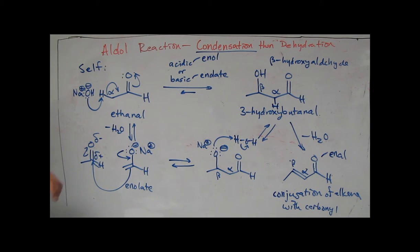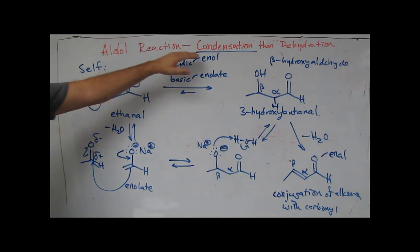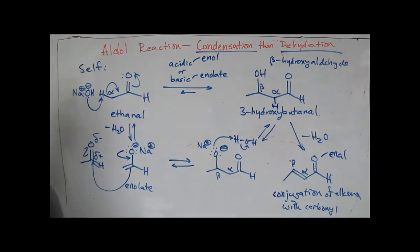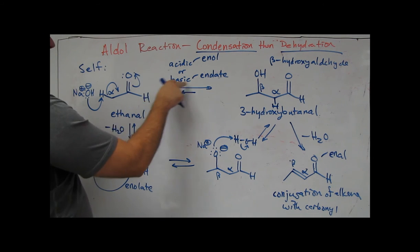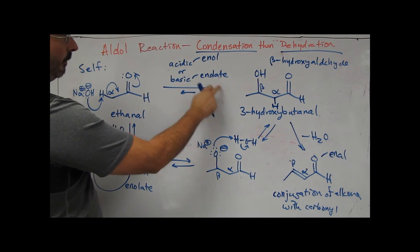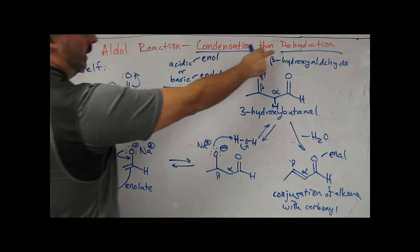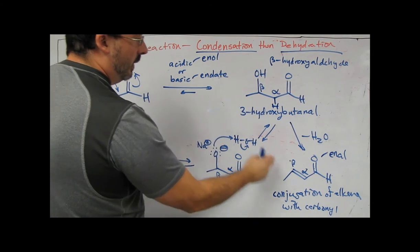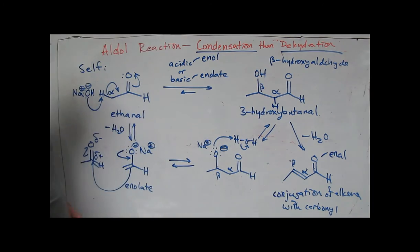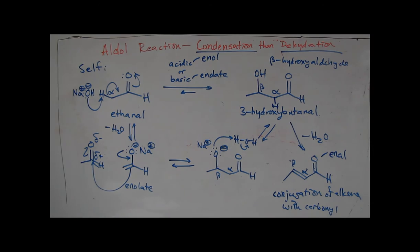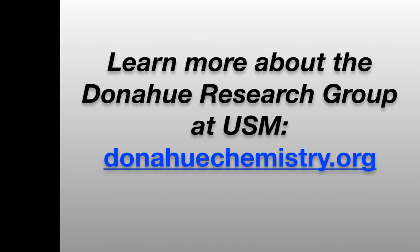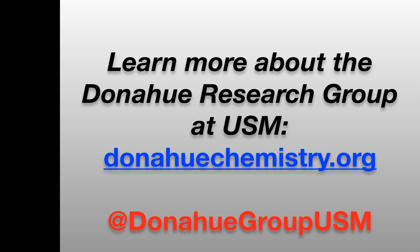To conclude, this has been a tutorial video on the simple aldol reaction: condensation and subsequent dehydration. We've taken ethanal under basic conditions with the enolate and formed 3-hydroxybutanal, which is the condensation product. Then we've done a dehydration across the alpha and beta carbons to form the enal.